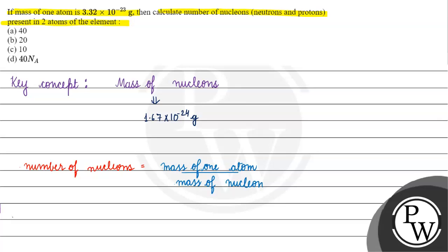Mass of one atom is 3.32 × 10 to the power minus 23 grams, and mass of nucleons is 1.67 × 10 to the power minus 24 grams. Look, what value do we get? This value comes to 19.8, or we can write it as 20.